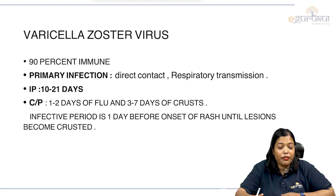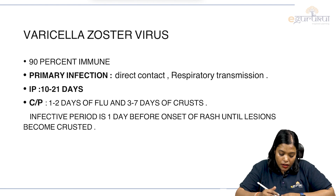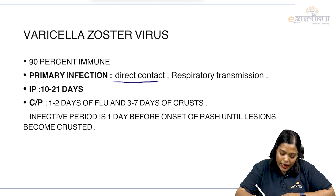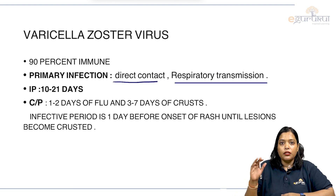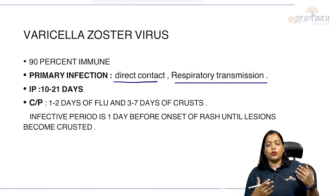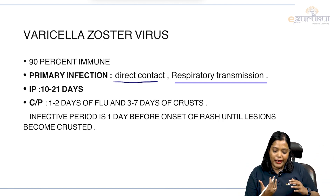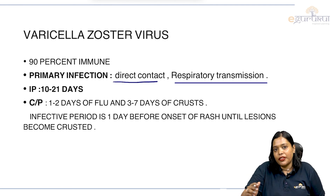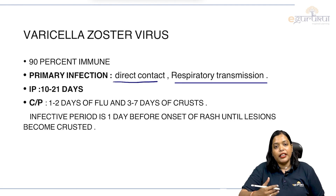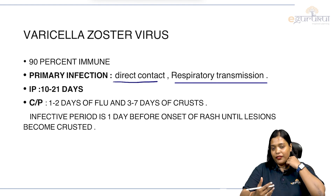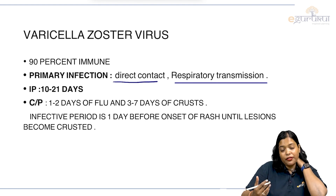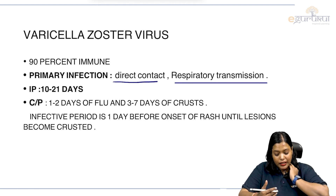But sometimes if we are not immune, it can definitely cause teratogenesis in the fetus. Primary infection is mainly through direct contact or respiratory transmission. The incubation period for the infection to develop is 10 to 21 days.